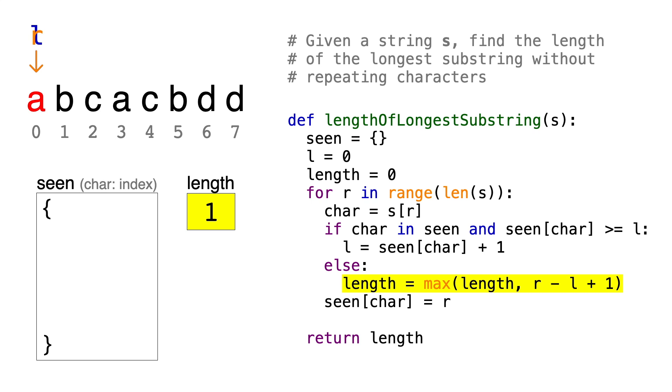Then, at the end of every loop, we'll record the position of the character we just added. So we'll add a key of A, which corresponds to a value of 0, its index.